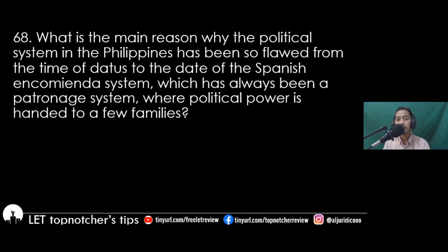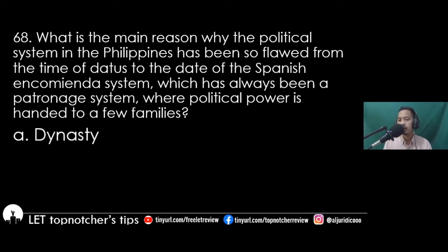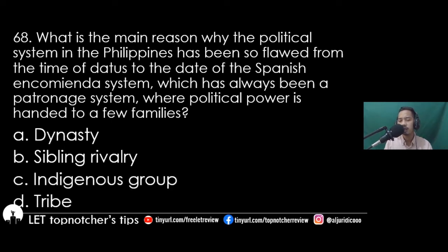Item 68: What is the main reason why the political system in the Philippines has been so flawed, from the time of tattoos to the Spanish encomienda system, which has always been a patronage system where political power is handed to a few families? A) dynasty, B) sibling rivalry, C) indigenous group, D) tribe. The best answer is letter A, dynasty.